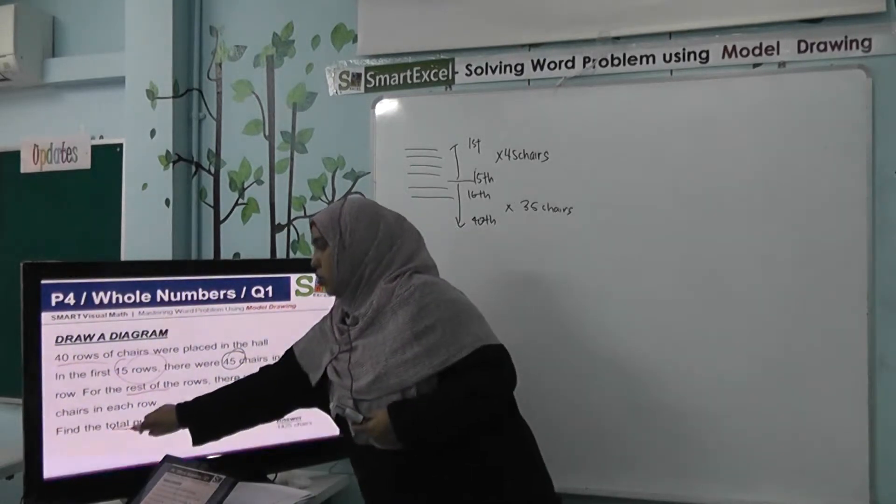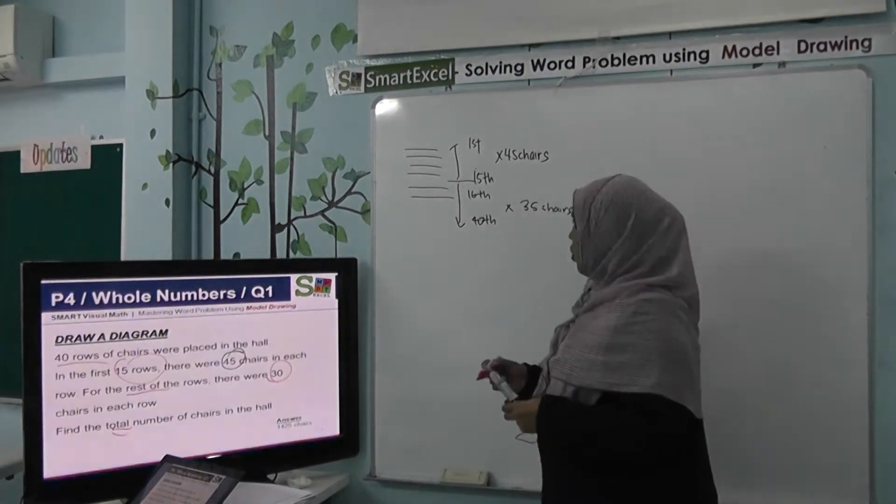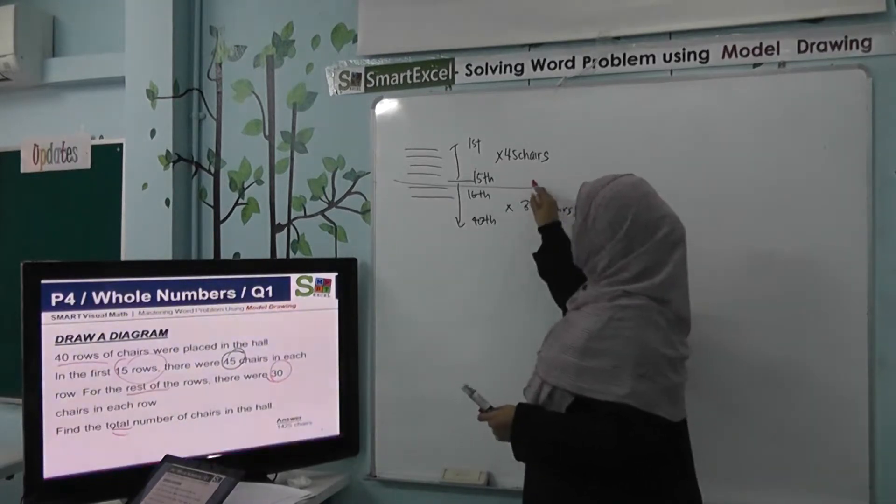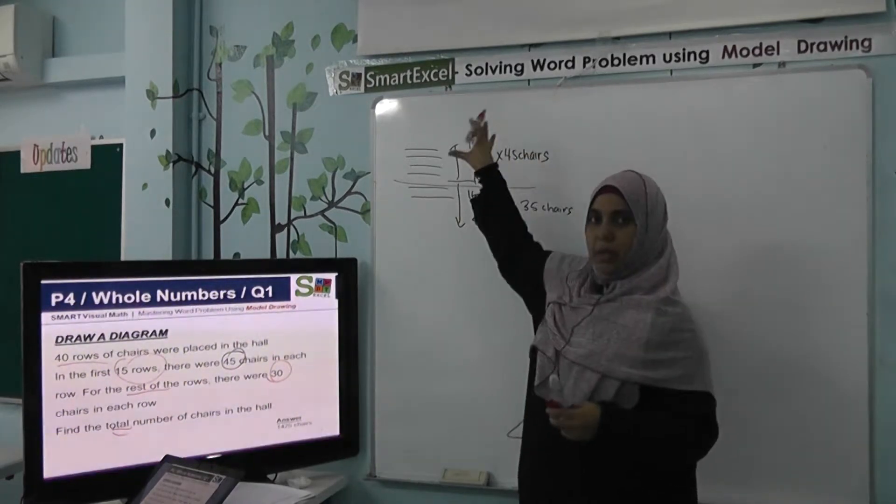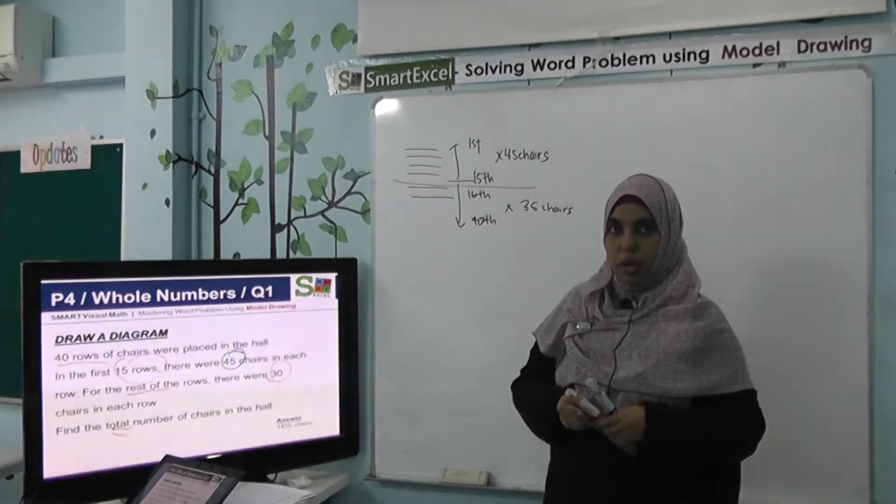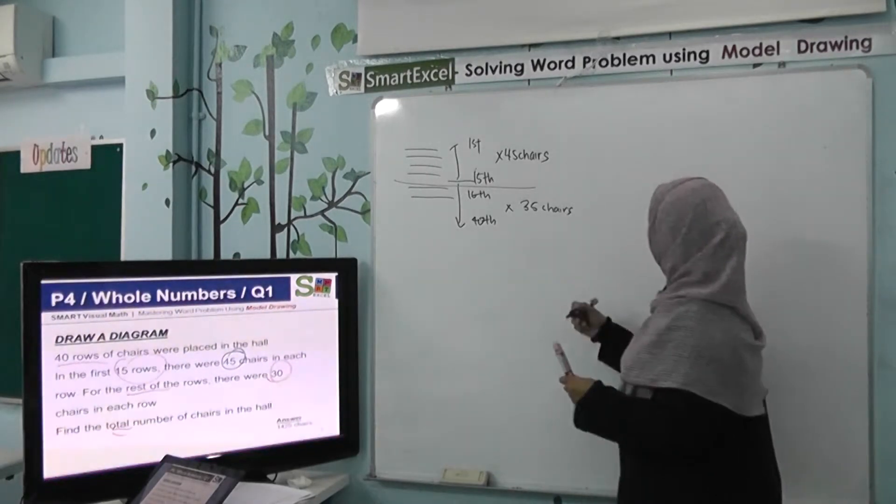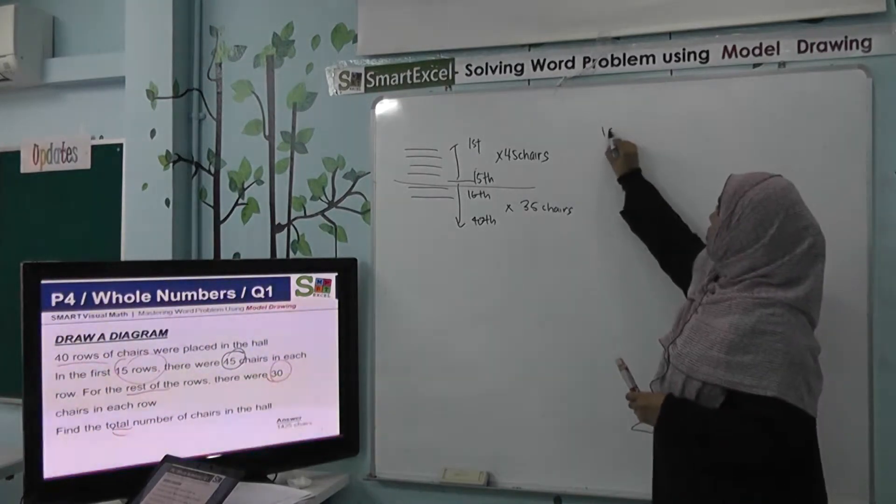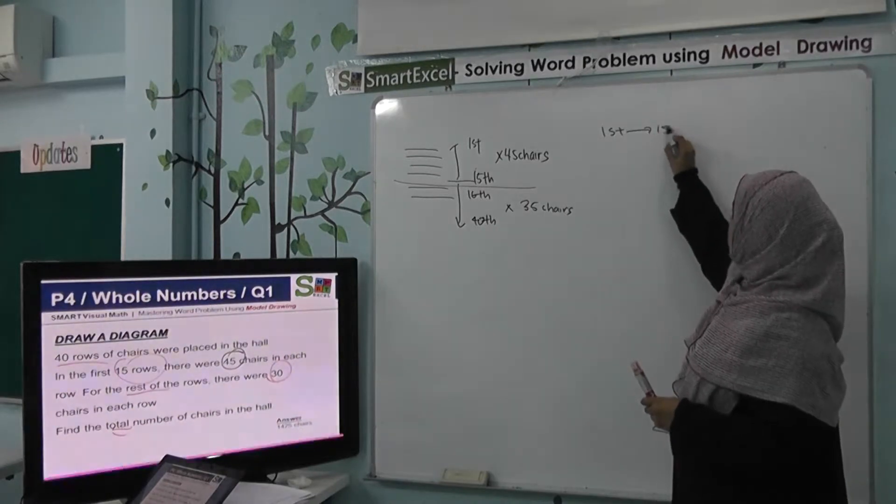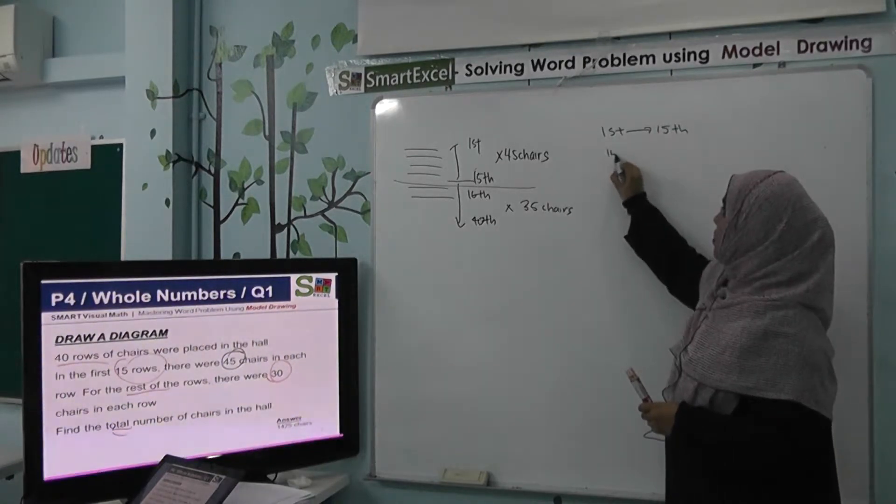And they ask for the total. So obviously, we need to find the number of chairs for your first part, the first 15 rows. So how can we do that? From your first to your 15th row, that is 15 rows itself.